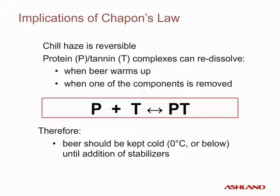Chapin's law states that proteins and tannoids are in a reversible equilibrium with protein-tannoid complexes. Chill haze is reversible; polyphenol-protein complexes can redissolve when beer warms up or when one of the components is removed. Therefore, beer should be kept cold until the addition of the stabilizer.